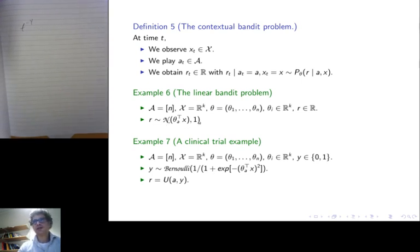So that's a standard linear bandit problem. Of course in something like clinical trials you don't observe a real number. You observe some kind of positive or negative outcome. So you can model this the same way, but instead of having a reward that is normally distributed you have an outcome Y. This can be zero or one, and it has a Bernoulli distribution with parameter that is defined in terms of the logistic function of the inner product between theta A and X.